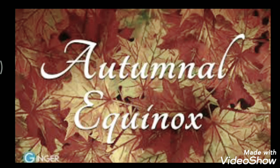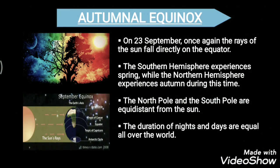Next we have the autumnal equinox. Like the spring equinox, on 23rd of September the rays of the Sun once again fall directly on the equator. This time the southern hemisphere experiences spring season while the northern hemisphere experiences autumn season. Again, the North Pole and South Pole are equidistant from the Sun, so the duration of nights and days are equal all over the world.